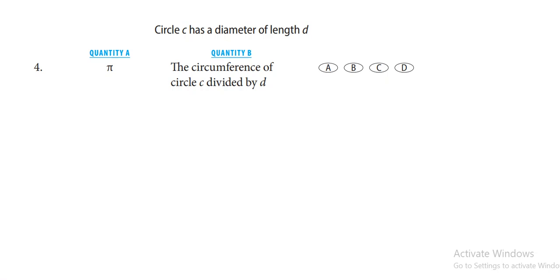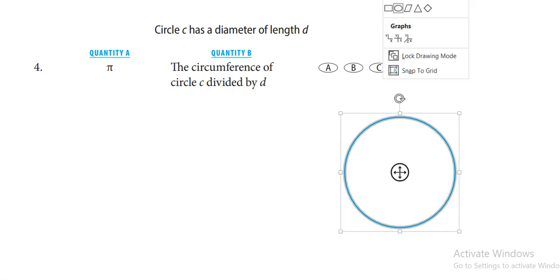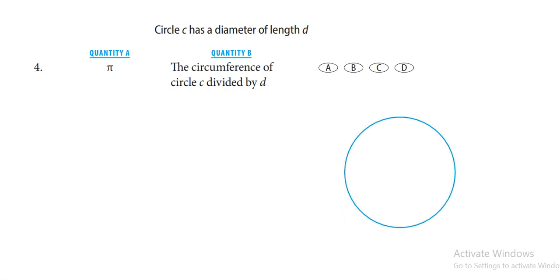So let's take a circle. This is circle C. This diameter is d, meaning this line across is the diameter d. So what will be the answer?